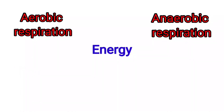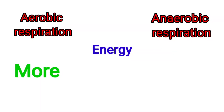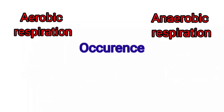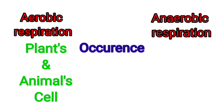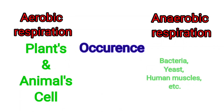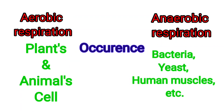In terms of energy, more energy is produced in aerobic respiration, whereas less energy is produced in anaerobic respiration. Regarding occurrence, aerobic respiration takes place in almost all plants and animal cells, whereas anaerobic respiration takes place in some bacteria, yeast, human muscle cells, etc.